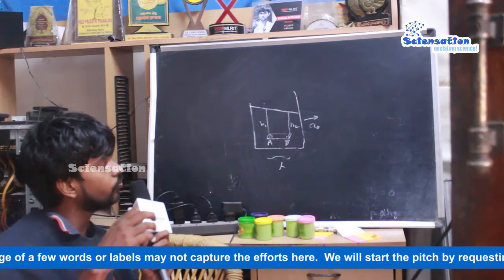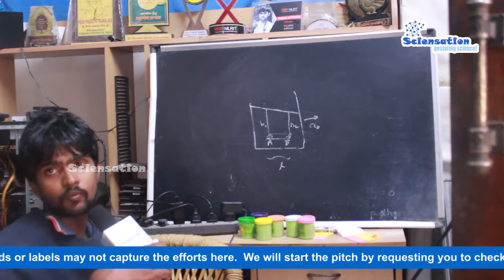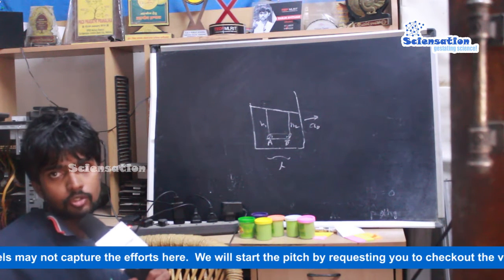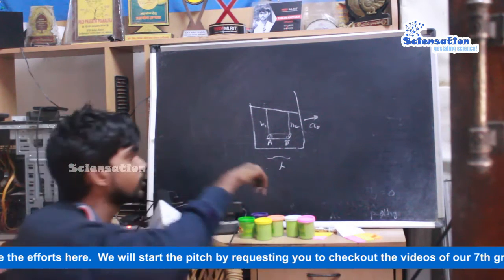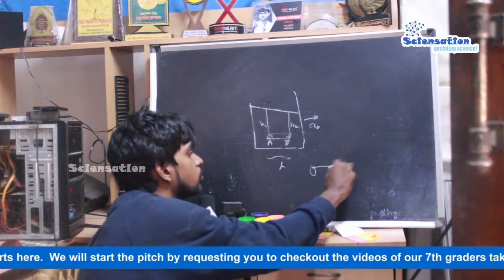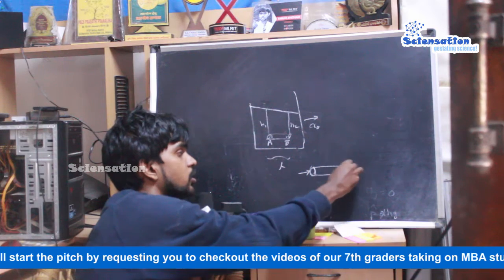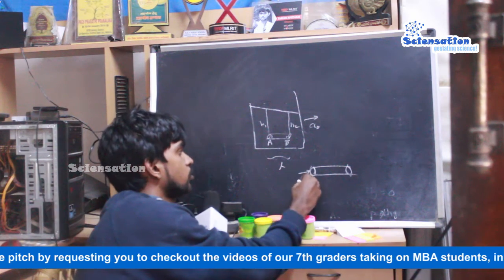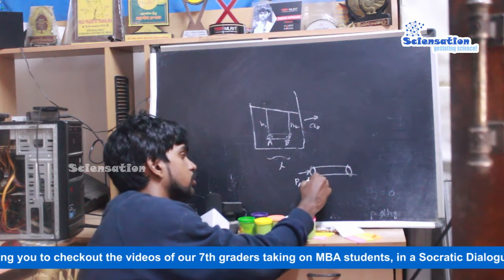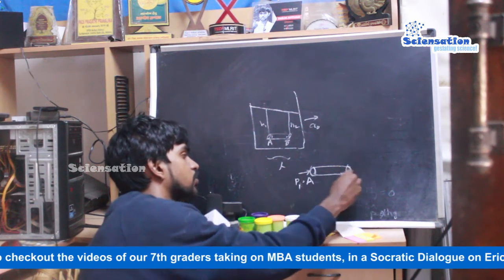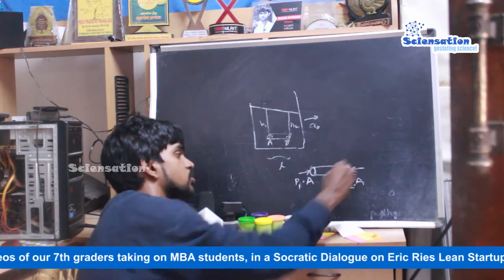The net force on this cylinder in the y direction is equal to zero, and the net acceleration is also zero, because this cylinder is only accelerating towards the right. So let us look at the free body diagram of this cylinder. If the area of the cylinder's circular cross-section is A, and the pressure at A is p1, then the force here will be p1 times area. Similarly, p2 times area is the force in the other direction.